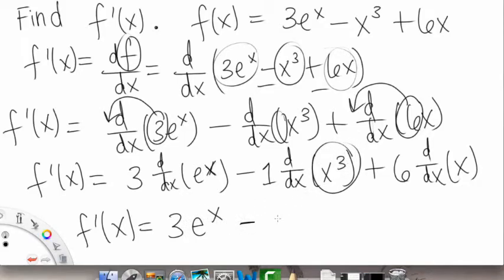So our power is 3, so we're going to bring that down in front. So we have a 3, and then x to the 3 minus 1, so 3 minus 1 is a 2, so we have a 2 left over. And then we have a plus 6, and again,